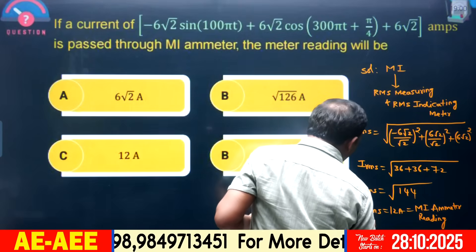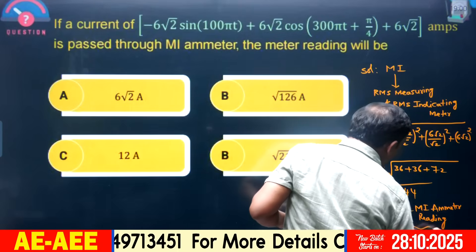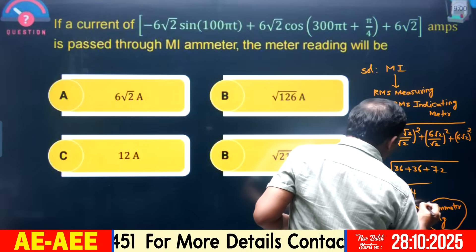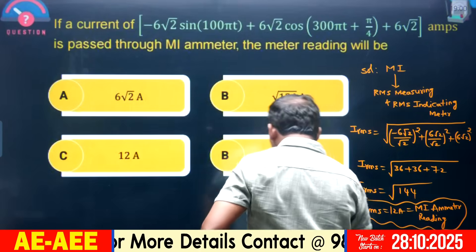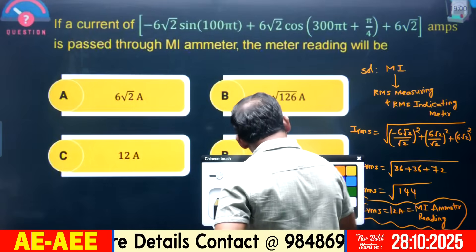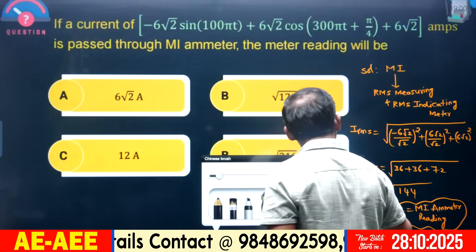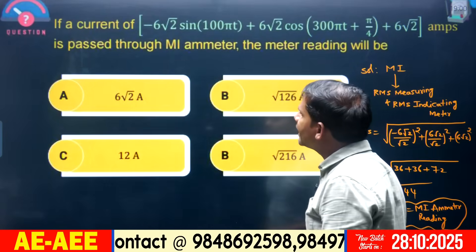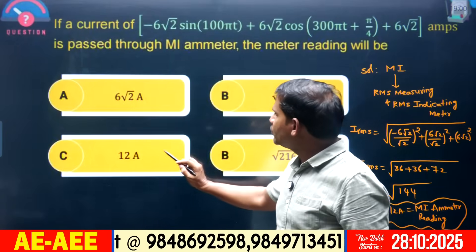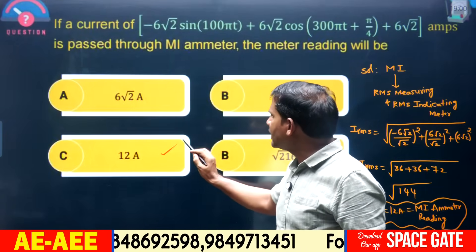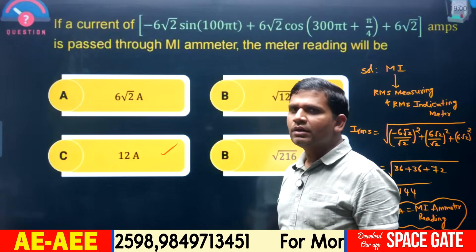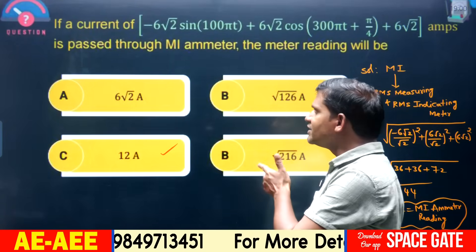The reading of the MI ammeter is 12 amperes — that is the correct option. Concentrate on this result.